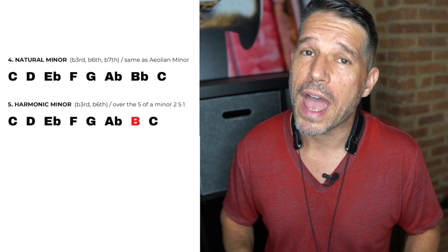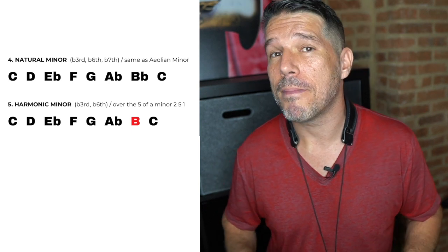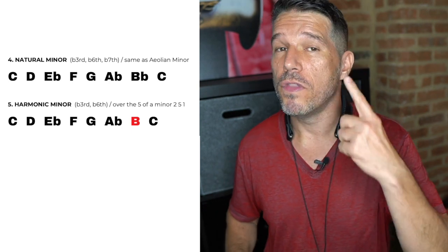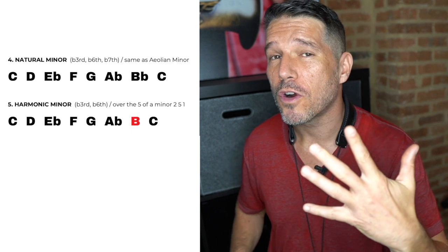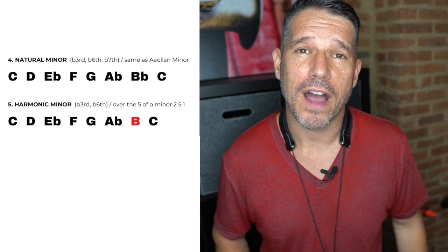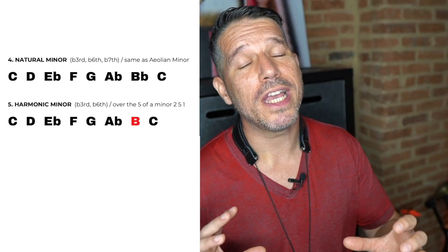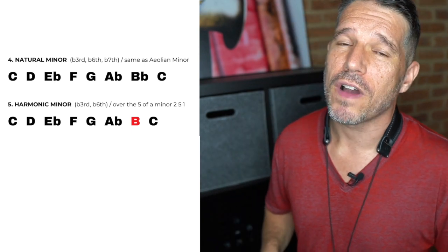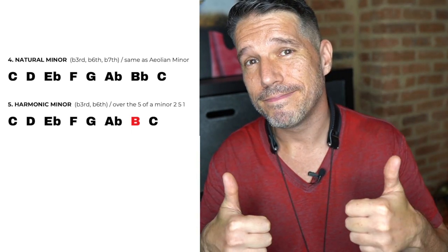To do that, you would use the harmonic minor of the one chord over the five chord in the minor two-five-one. That gives you a really unique sound and is going to make your minor two-five-one sound really cool.